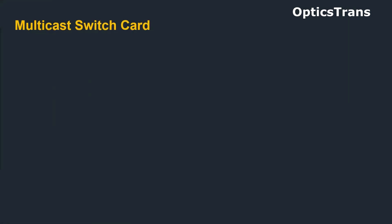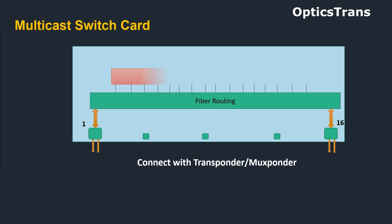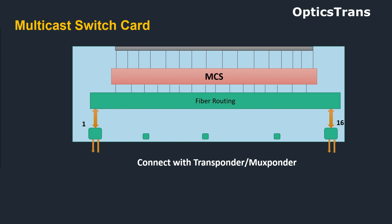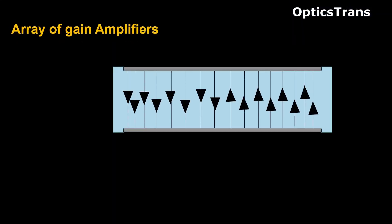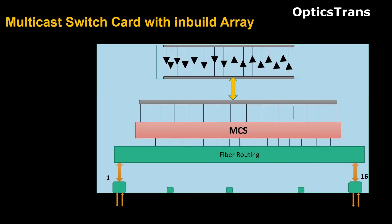The next card is the multicast switch card, shortened as MCS. This card has 16 ports to connect with transponder or muxponder to add or drop the signal. Inside this card there is fiber routing and then MCS to direct the signal to 8 degrees. The other side of this card connects with the array card or fiber shuffle card with MPO cable. Next is the array card — this card has 8 fixed gain amplifiers used to offset the losses from the MCS card. One side connects with MCS, the other side with WSS using MPO cables. Some manufacturers integrate the array card with MCS, meaning MCS has a built-in array card.